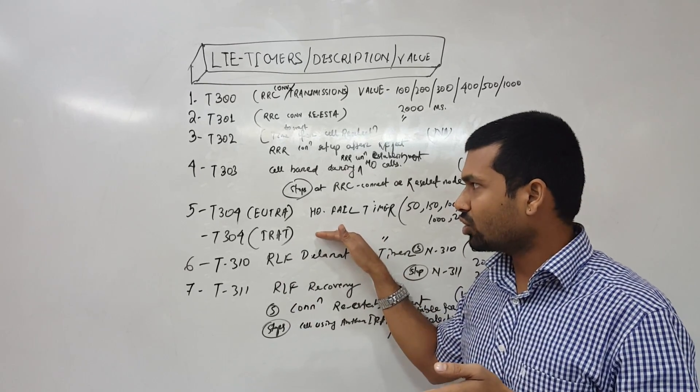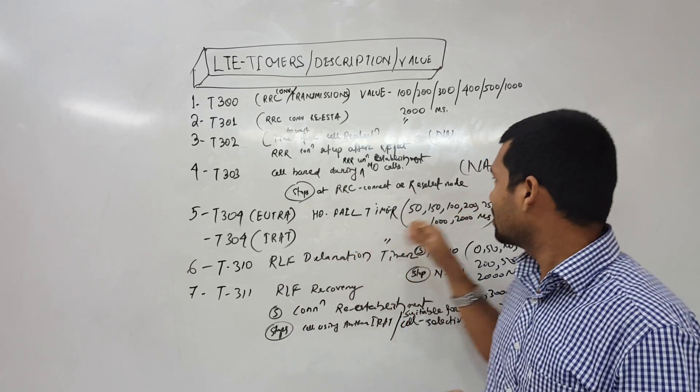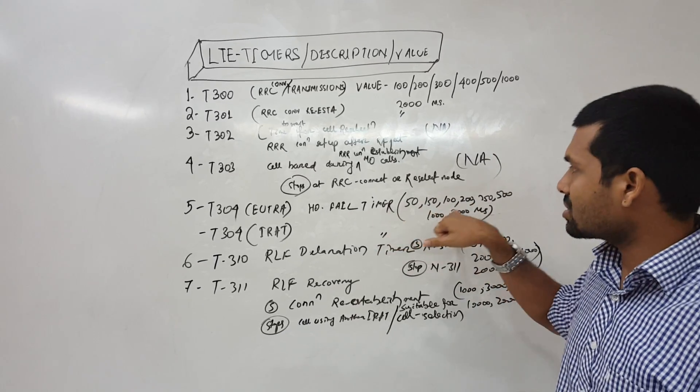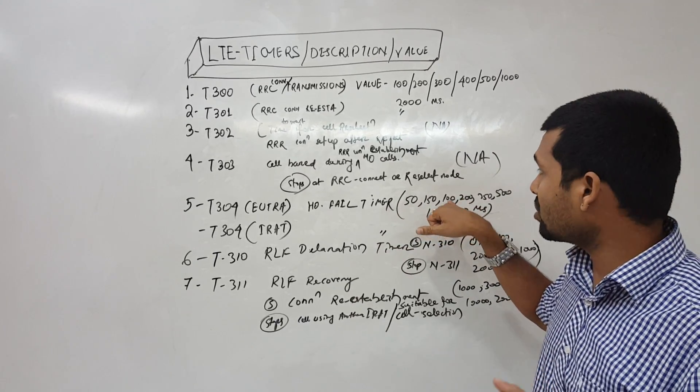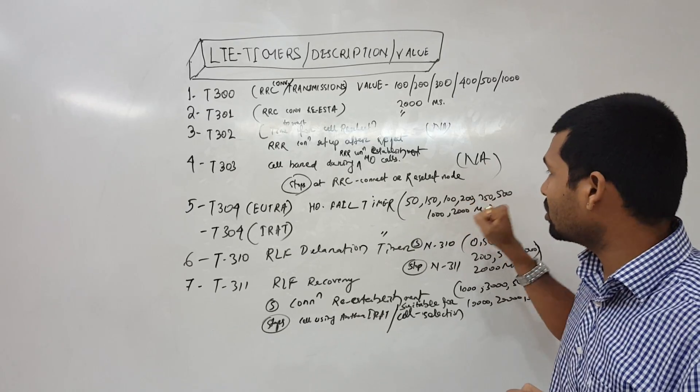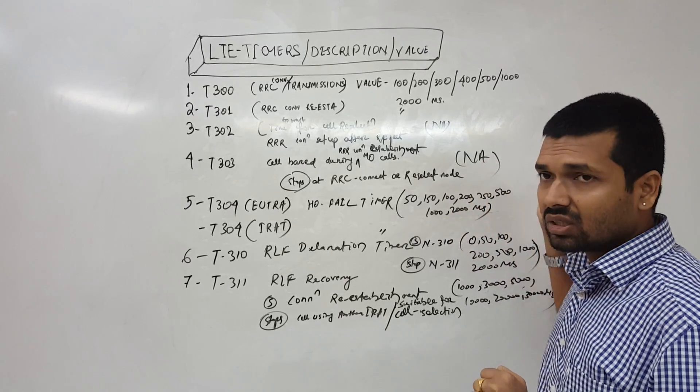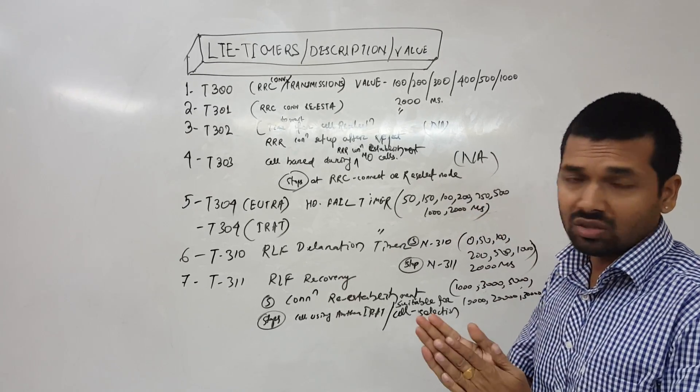So it is that timer, T304 handover fail timers. The value is 50 milliseconds or 100 milliseconds or 150 or 200 or 250 as per the operator or the customer's requirement.